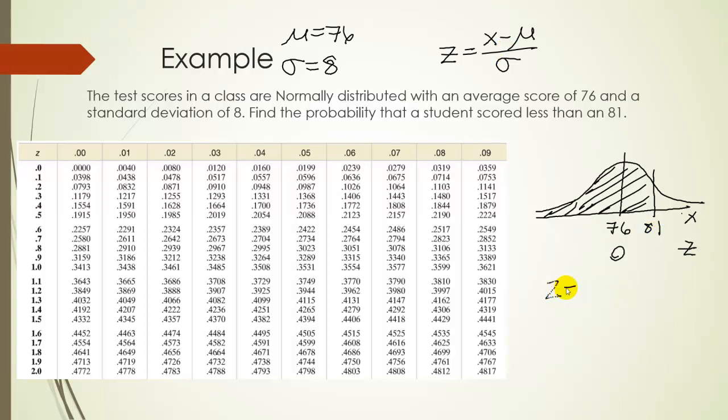So let's use it to find the z-score of 81. So z would be equal to 81, because that's our x value, minus 76, our average, over the standard deviation, which is 8. If you do this calculation, you get 5 over 8, which, let's take out my calculator, is approximately, well, is exactly .625.